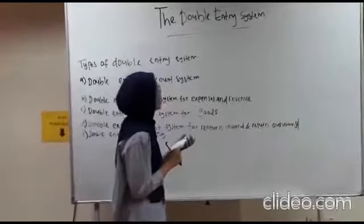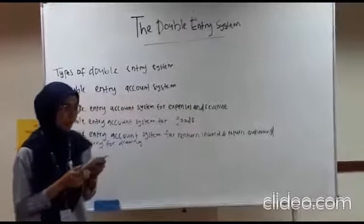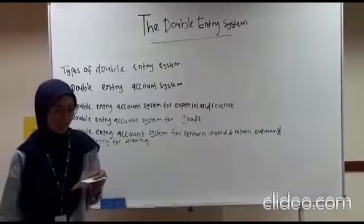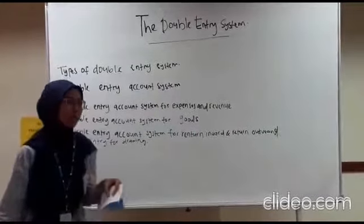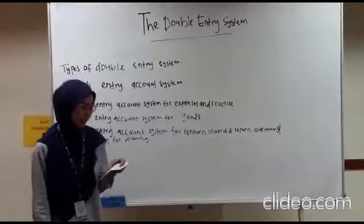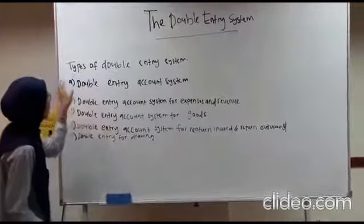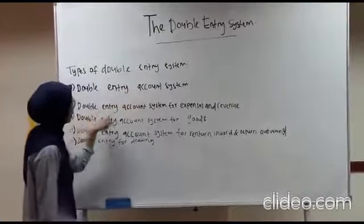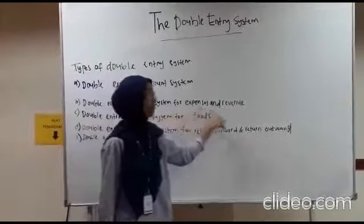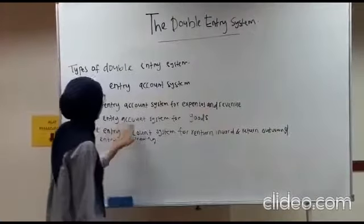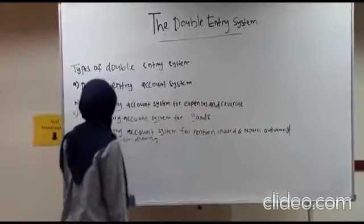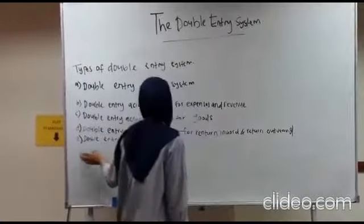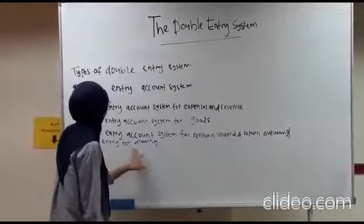Today's topic is the double entry system. The double entry system is a system where there are 5 sides. First is the double entry account system, double entry account system for expenses and revenue, double entry account system for goods, double entry account system for retail and goods, and the last one is double entry for drawing goods.